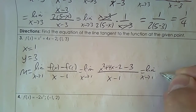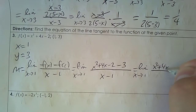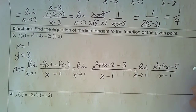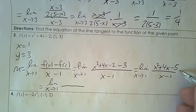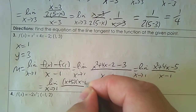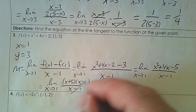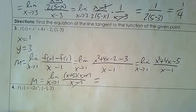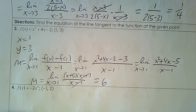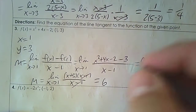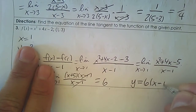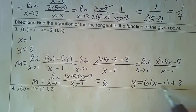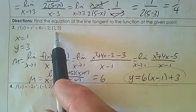Now it's time to do some algebra. Combining like terms gives x² plus 4x minus 5. I can factor this: the two numbers are positive 5 and negative 1, giving (x+5)(x-1). The hole (x-1) divides out. Substituting x=1 gives slope equals 6. The equation is y equals 6 times (x minus 1) plus 3, changing the sign on the x-coordinate and keeping the sign on the y-coordinate. That tangent line touches the point (1, 3).